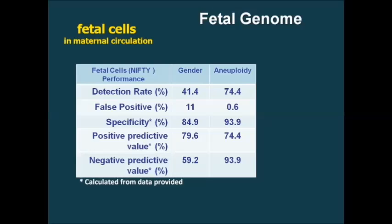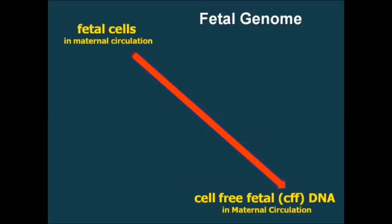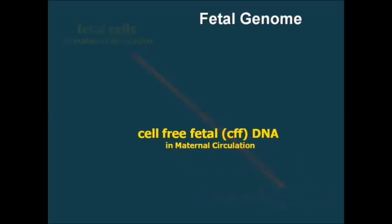In the NIFTI trial, detection rates fell significantly short compared to biochemical and ultrasound methods already in clinical use. Gender detection was only around 40 to 45 percent accurate and aneuploidy detection was somewhere around 75 percent accurate. It was clear that using the available methods at the time, the NIFTI trial laid the groundwork for an alternative approach — specifically identifying aneuploidy by way of the fetal genome. It had been known since the mid-1990s that there was cell-free fetal DNA in the maternal circulation, and the NIFTI trial data allowed focus on this approach rather than fetal cells.